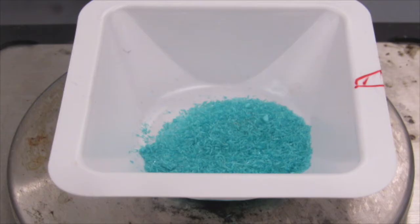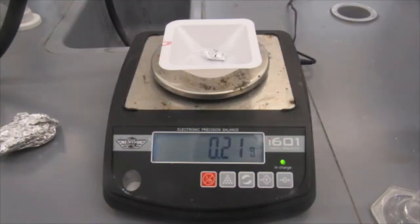To the copper chloride, we're going to add a little bit of aluminum in the form of aluminum foil. You'll need about 0.2 grams to do this experiment.